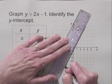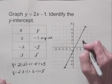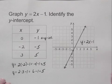Connect the points. And we'll label the graph with the equation y equals 2x minus 1.